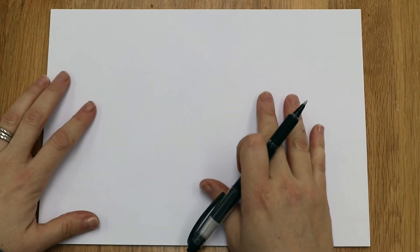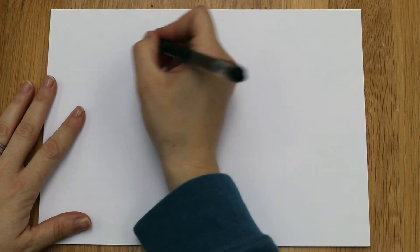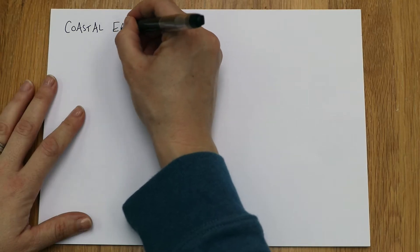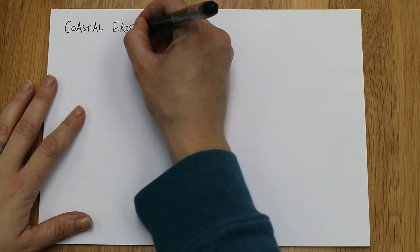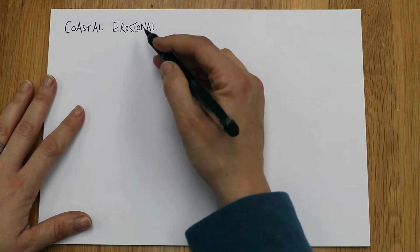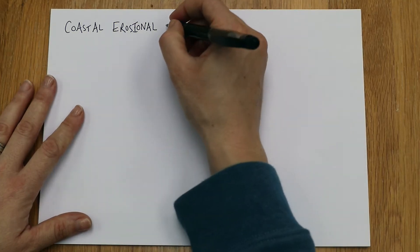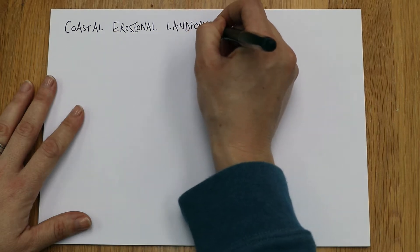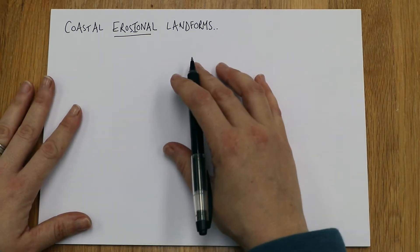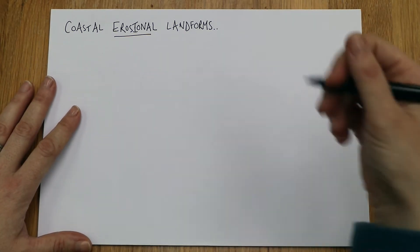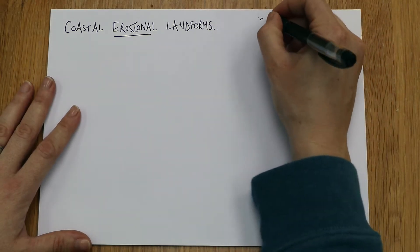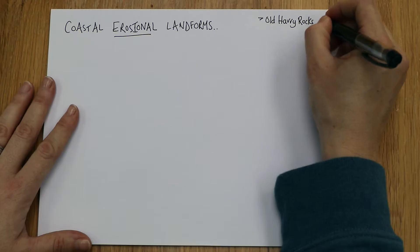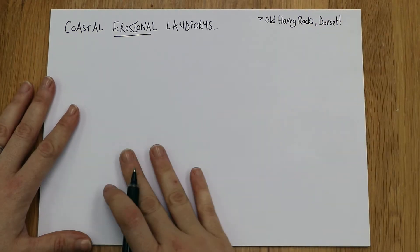Today we're going to look at something called coastal erosional landforms. These are different to depositional landforms — they are caused by erosion, not deposition. You can find another video on my channel covering how spits and bars are formed from deposition. Today we're looking at erosional landforms and a little bit about the processes that form them. As this is case studies, you could be expected to refer to one, so try to remember Old Harry Rocks, which is a big stack in Dorset — that's your best case study.